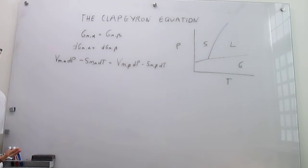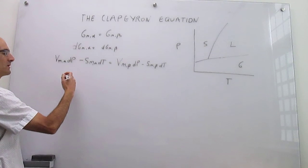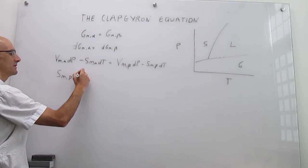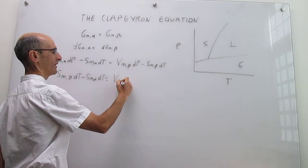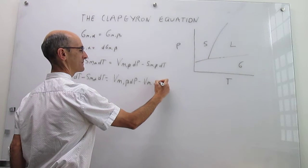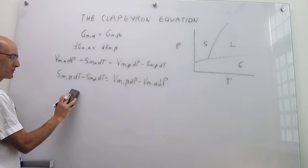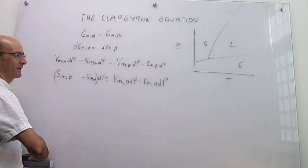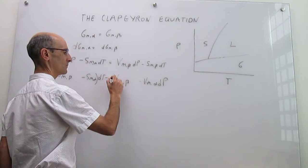What we're going to do is group like terms together — putting the molar entropies together and then the molar volumes. So this gives us the molar entropy of the beta phase times dT minus the molar entropy of the alpha phase times dT, and on the other side the molar volume of the beta phase and the molar volume of the alpha phase. Taking the common factor of those differentials gives us what happens to the molar entropies and what happens to the molar volumes.